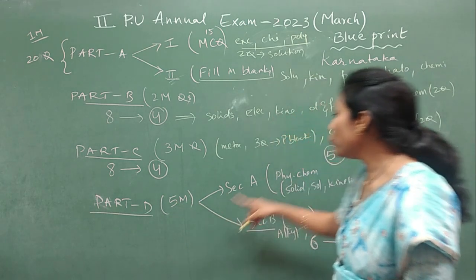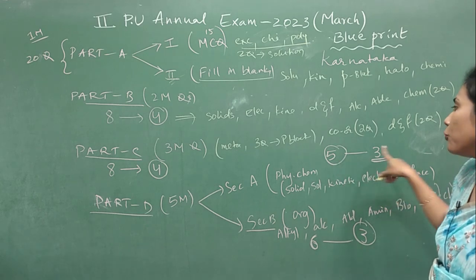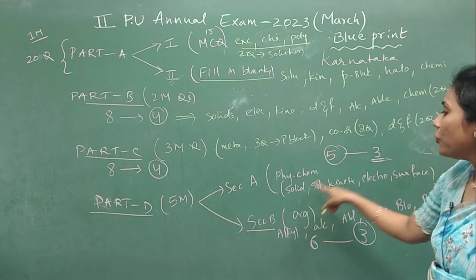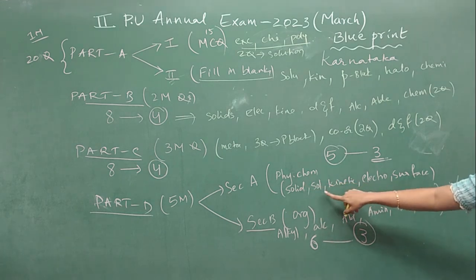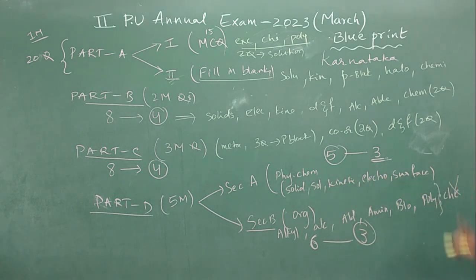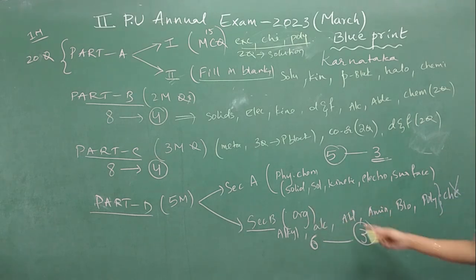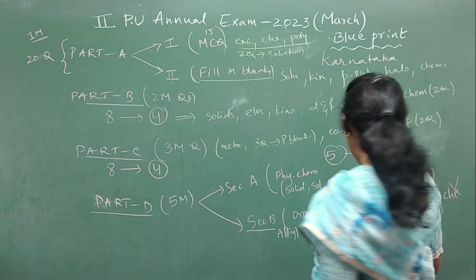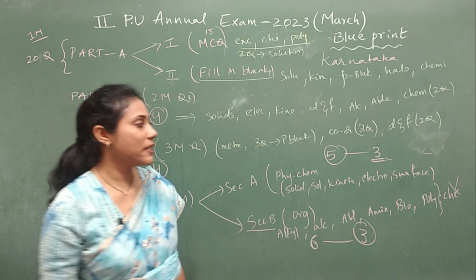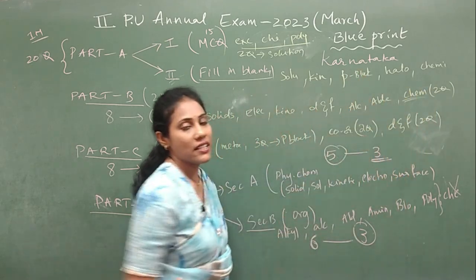For Part D, Section A has 5 questions from the five physical chemistry chapters — solids, solutions, kinetics, electrochemistry, and surface chemistry — attempt 3 out of 5. Section B has 6 questions from organic chapters: alkyl halides, aryl halides, alcohols/phenols/ethers, aldehydes/ketones/carboxylic acids, amines, biomolecules, and polymers. Chemistry in everyday life has no 5-mark question — it only has two-mark questions in Part B.